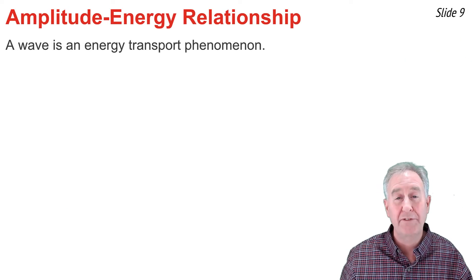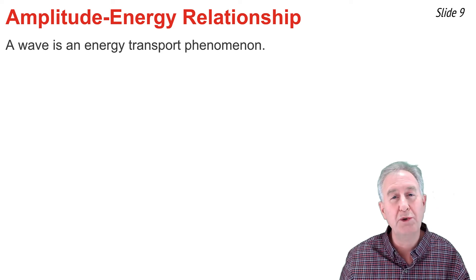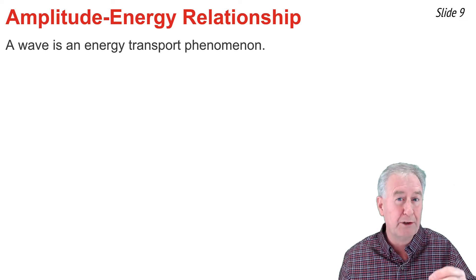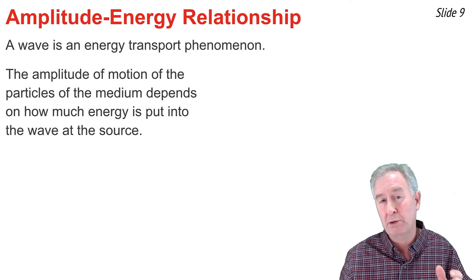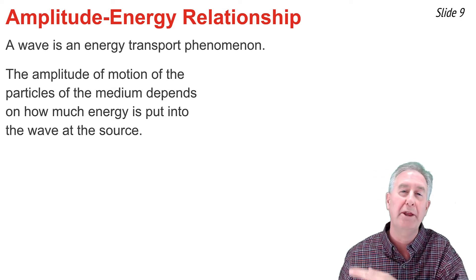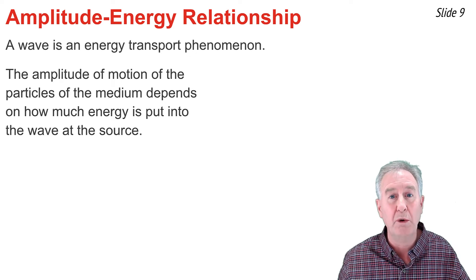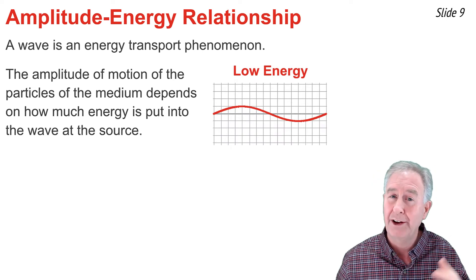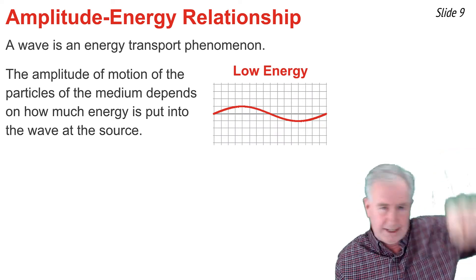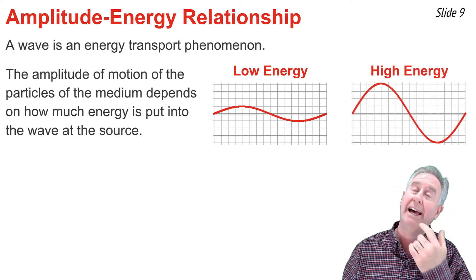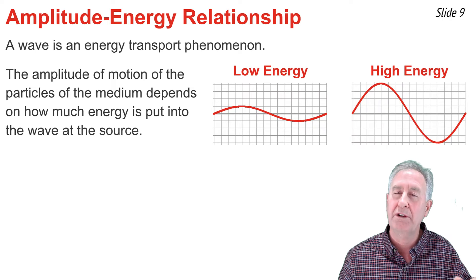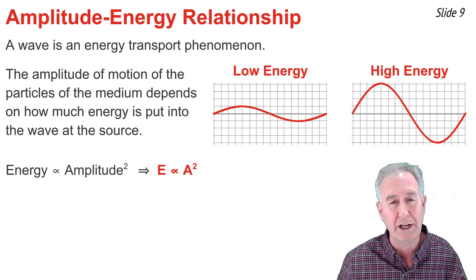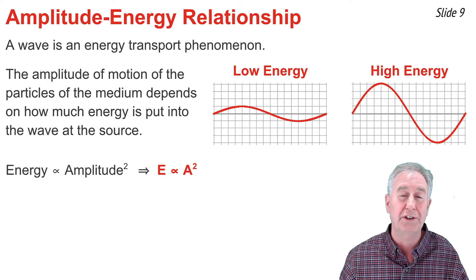A wave is an energy transport phenomenon that moves energy from one location to another without the actual movement of matter. The amplitude of particle vibration reflects the amount of energy put into the wave at the source. A gently vibrated rope produces a low-amplitude wave, while vigorous vibration produces a high-amplitude wave. The relationship is a power relationship: energy is proportional to amplitude squared.